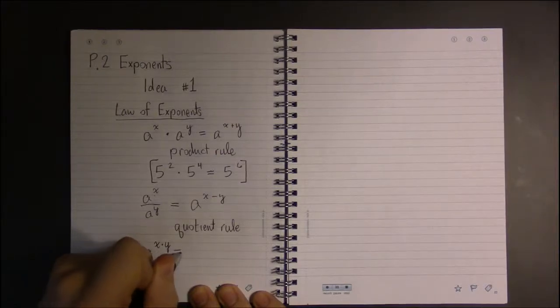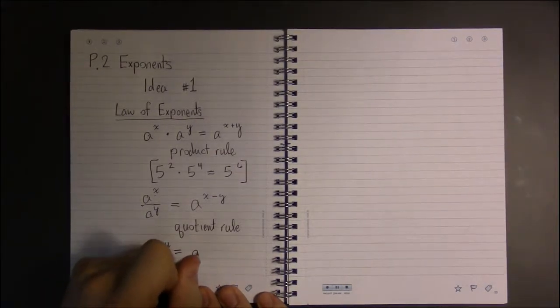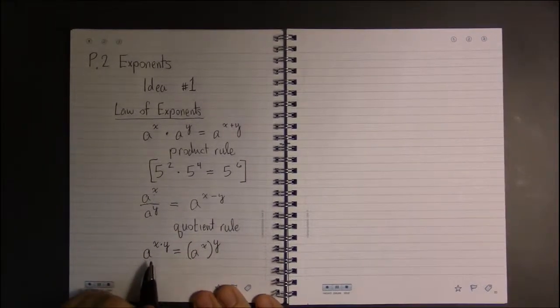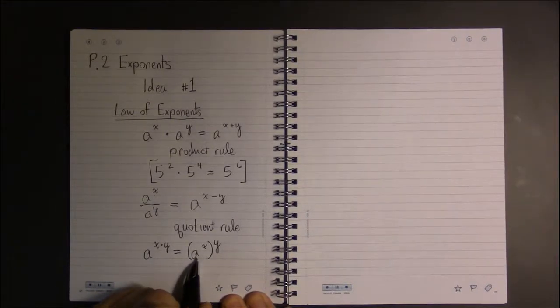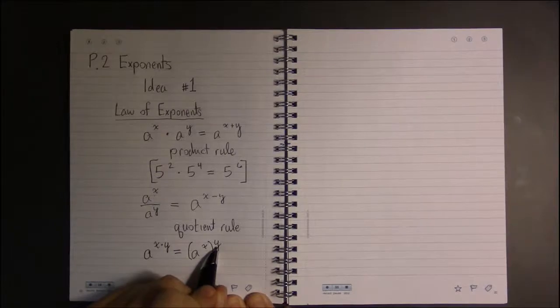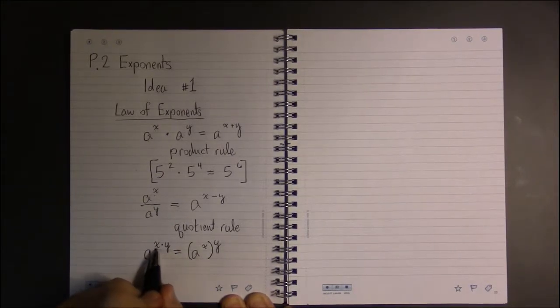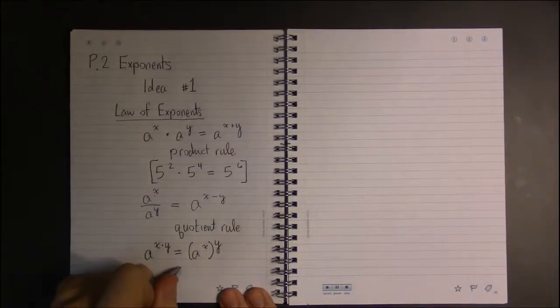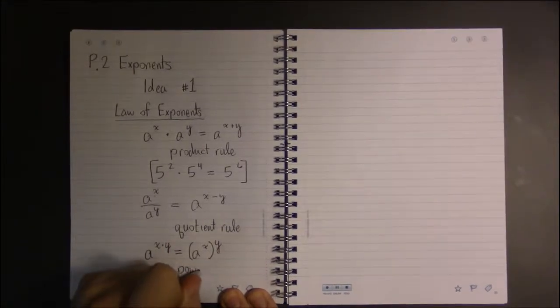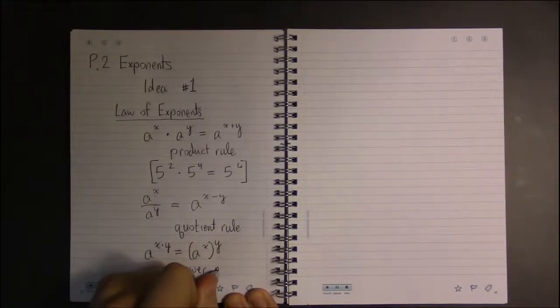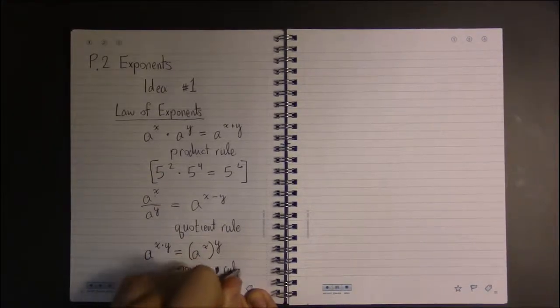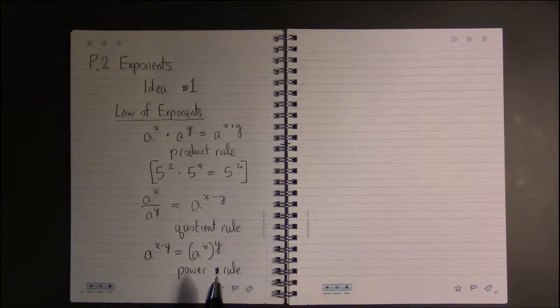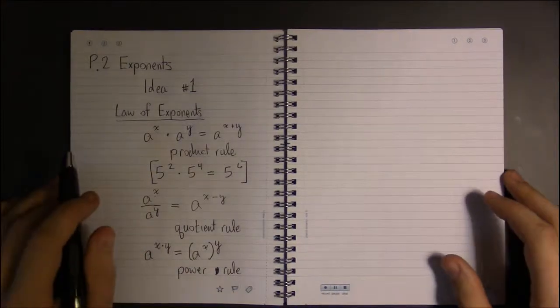This is a little bit trickier to connect with the motivation video, but it turns out that taking an exponent to another exponent just involves multiplying these two exponents together. The book calls this the power rule. And if you think about it and go back to the motivation video, you can derive why this makes sense.